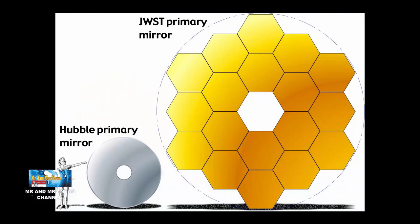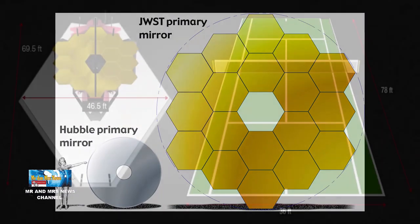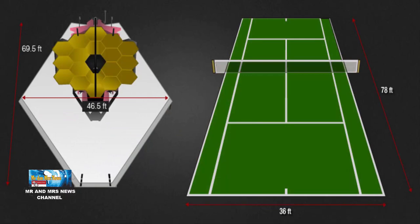Webb akan memiliki bidang pandang yang jauh lebih besar daripada Hubble. Tabir surya Webb berukuran sekitar 22 meter x 12 meter, ukurannya sekitar setengah dari ukuran pesawat 737. Sunshieldnya seukuran lapangan tenis.